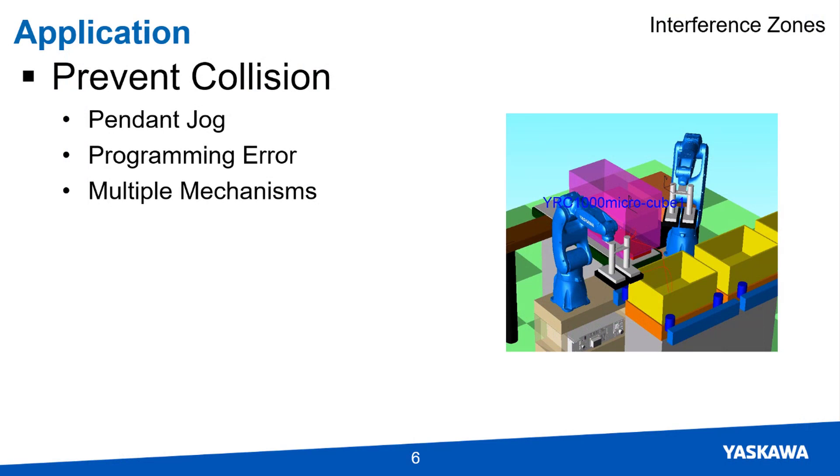As the name suggests, interference zones are intended to prevent the TCP from interfering with other parts of the system. Entering a space at the wrong time could even result in a collision and damage. It offers a level of collision prevention when jogging the mechanism with a pendant.